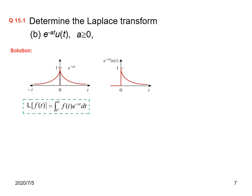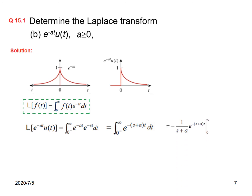Now let us solve. Take the Laplace using the formula. The Laplace of e to the minus at times u(t) is the integral from 0 to infinity of e to the minus at times e to the minus st dt. Since u(t) is already covered by the limits, we combine the exponents. Using the integral formula, we get 1 over s plus a times e to the minus s plus a times t, evaluated from 0 to infinity. At infinity this becomes 0, and at t equals 0 it becomes 1. So the final answer is 1 divided by s plus a.